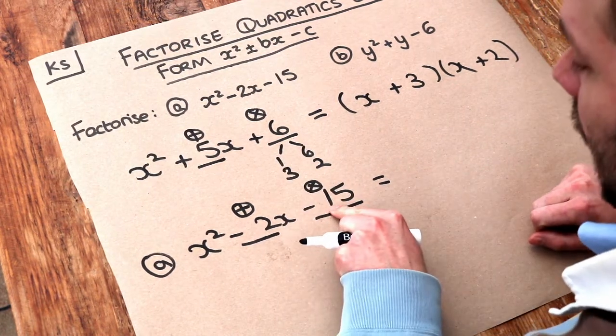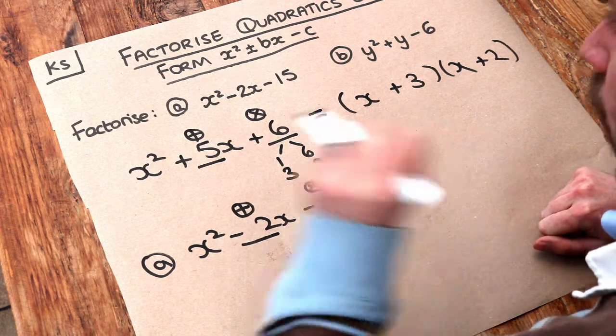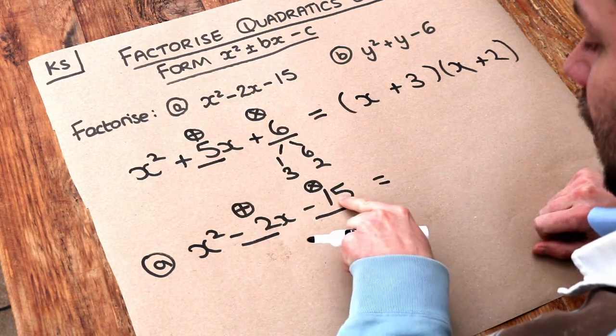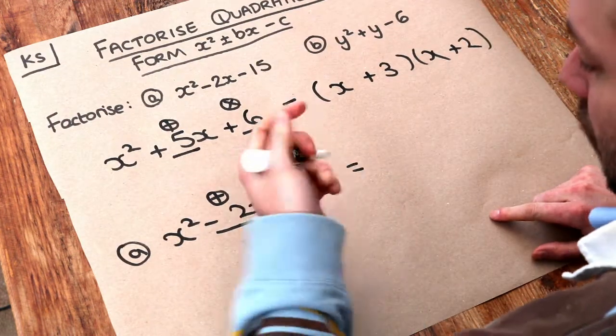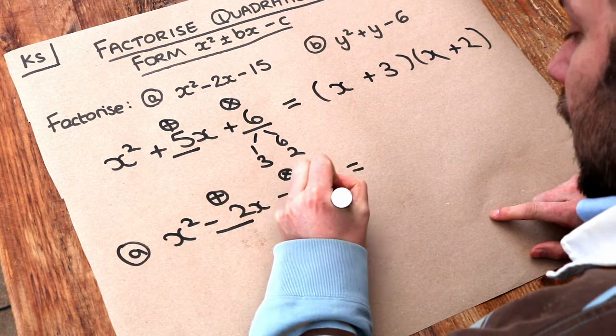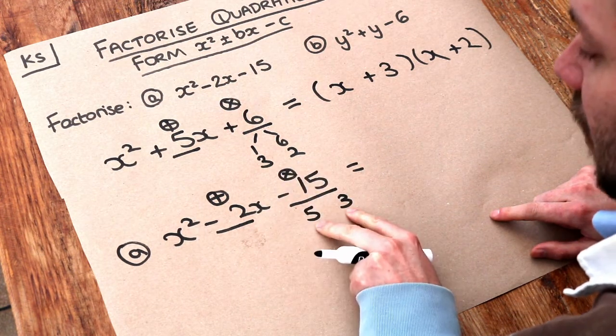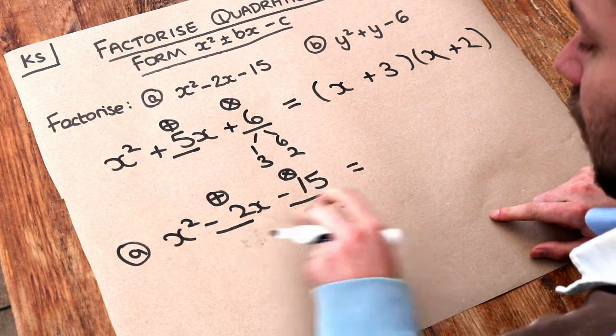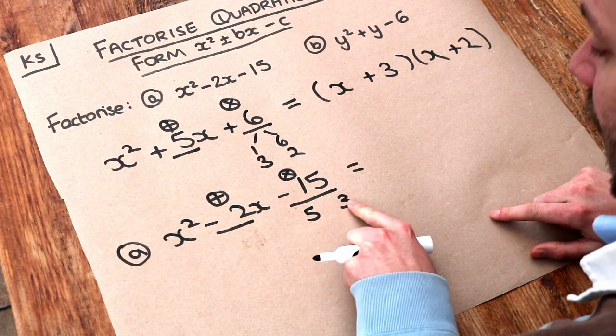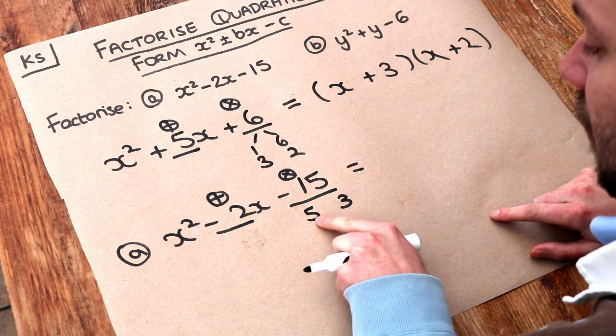Now if two numbers multiply to give a negative number it must be that one of them is positive and one of them is negative. So let's think about the different numbers that multiply to give 15 if it was positive. Well we could have 5 and 3 for example, and can you see that 5 and 3 combine in some way to make minus 2. Remember that if these multiply to give negative 15, one of these has to be negative and one positive. So which one is it?